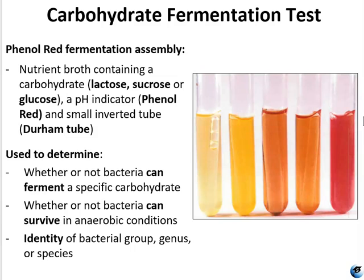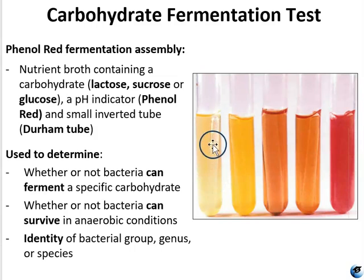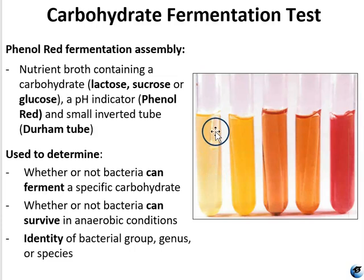The phenol red fermentation test utilizes an assembly consisting of nutrient broths containing a carbohydrate — in this case we're looking at lactose, sucrose, and glucose — and you also have a pH indicator. That's where it gets its name: the phenol red is the indicator used in this test. You also have a small inverted test tube inside the broth called a Durham tube, which is used to capture gas. So if fermentation is producing CO2 or hydrogen gas as a byproduct, it will be captured in this little tube as bubbles.